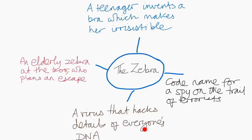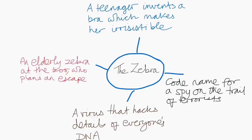I'm picking things that are in the news that I'm thinking of, that come to me naturally. A virus that hacks details of everyone's DNA — DNA stories are constantly in the news, and I've gone from code name to virus, just a word association that worked for me. And then obviously a zebra is also an animal, so an elderly zebra at the zoo who plans an escape. Maybe I'm thinking of something like Animal Farm, or films like Madagascar. That is literally a minute or two of planning where I'll just whack any idea down.